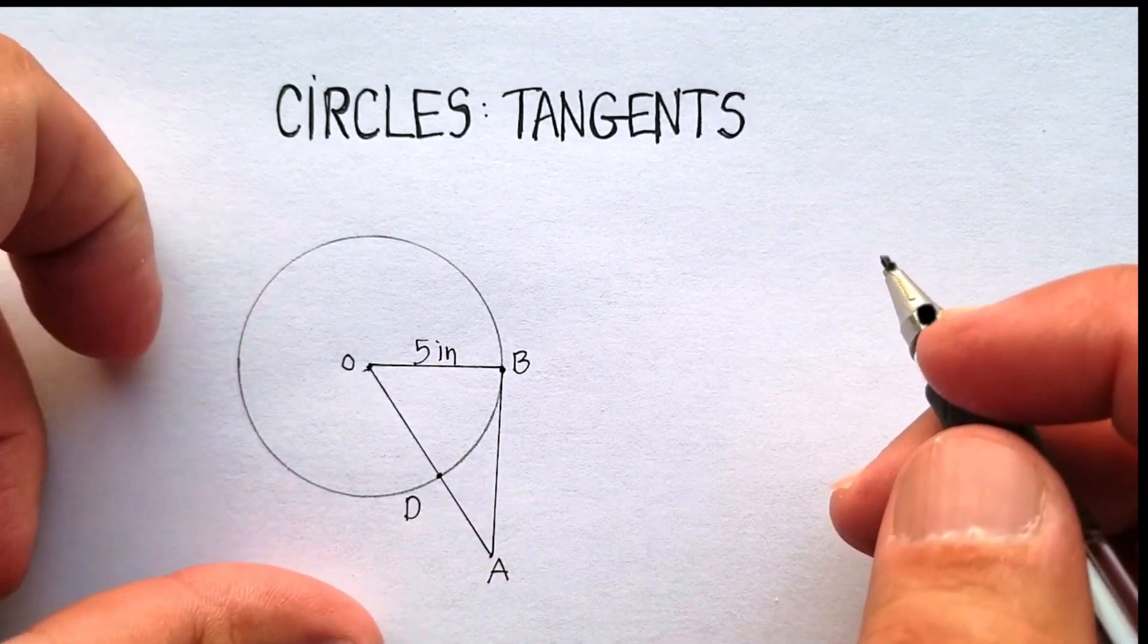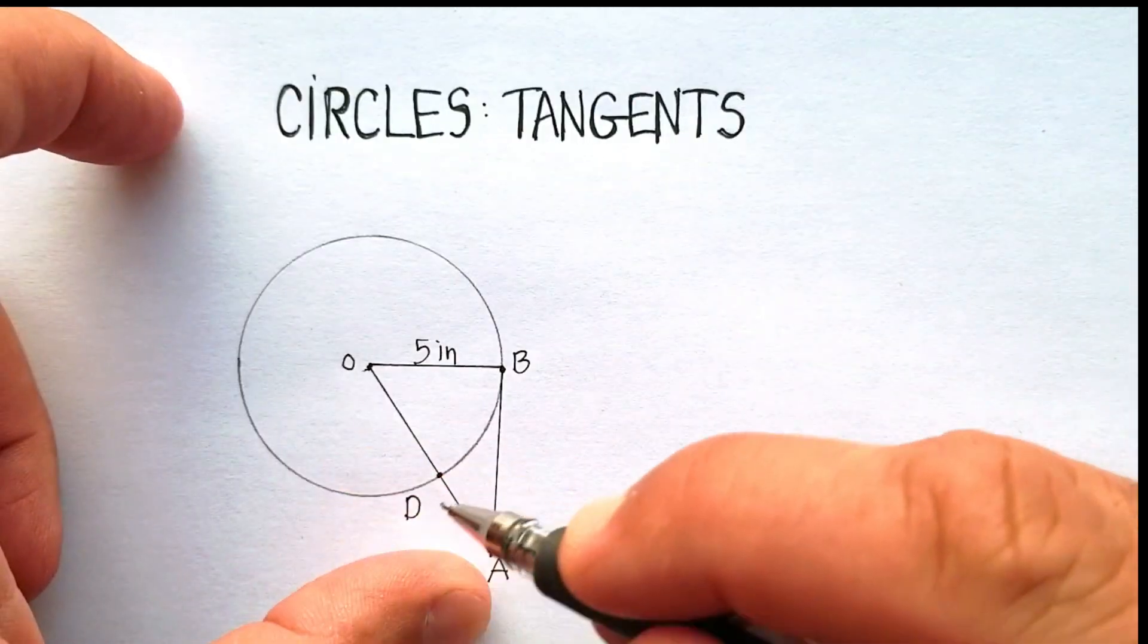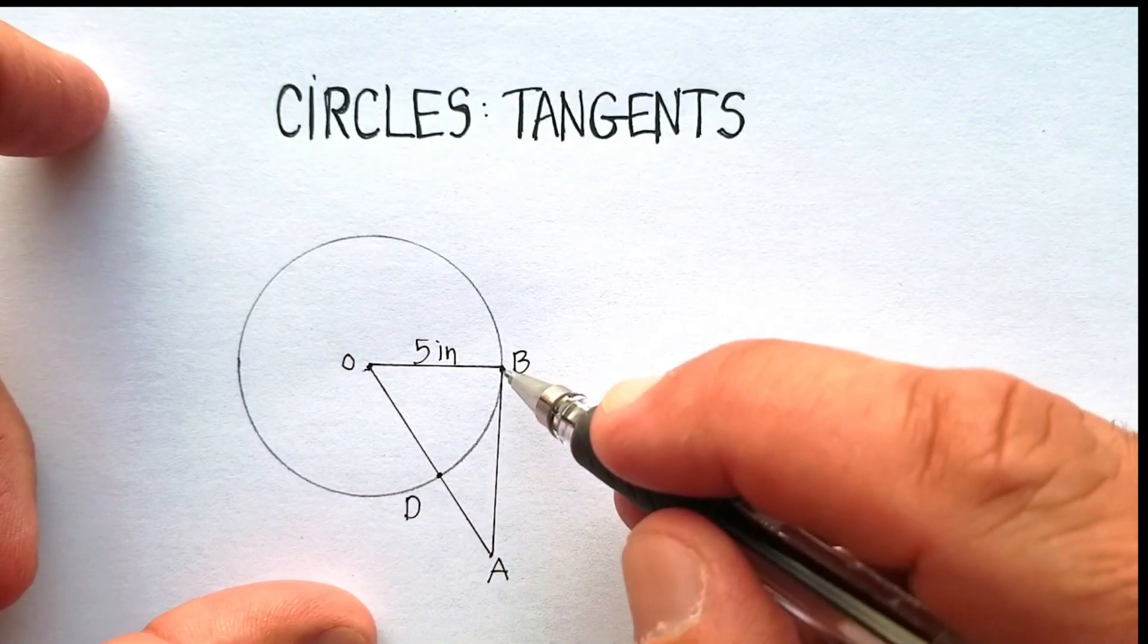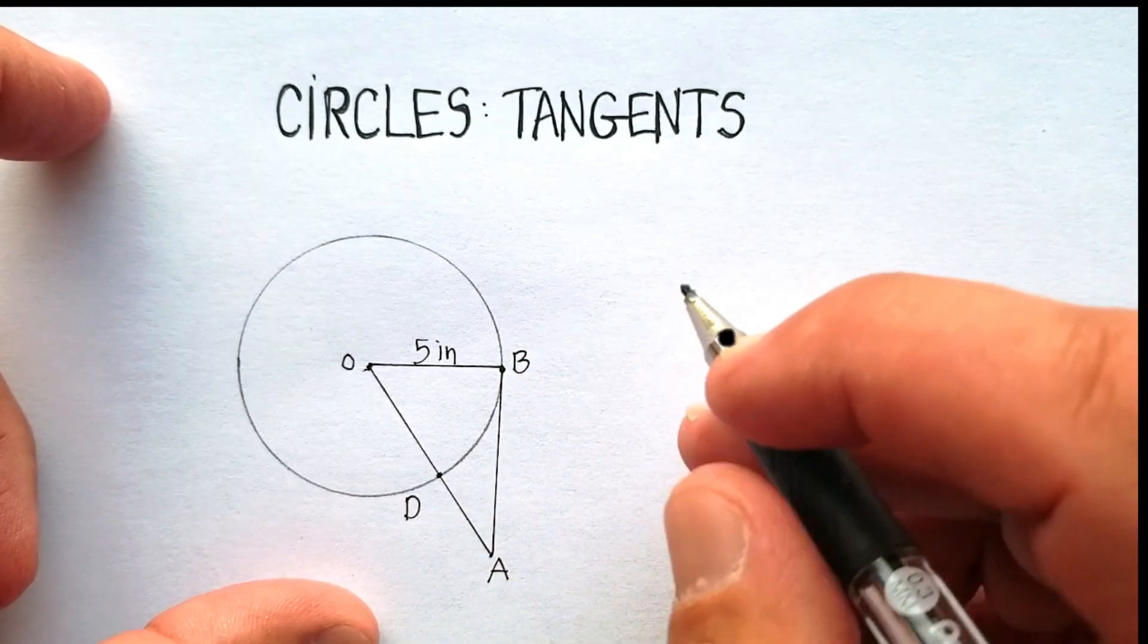Remember, the tangent line is a line that intersects the circle, the circumference of the circle, at one spot, and one and only one spot.